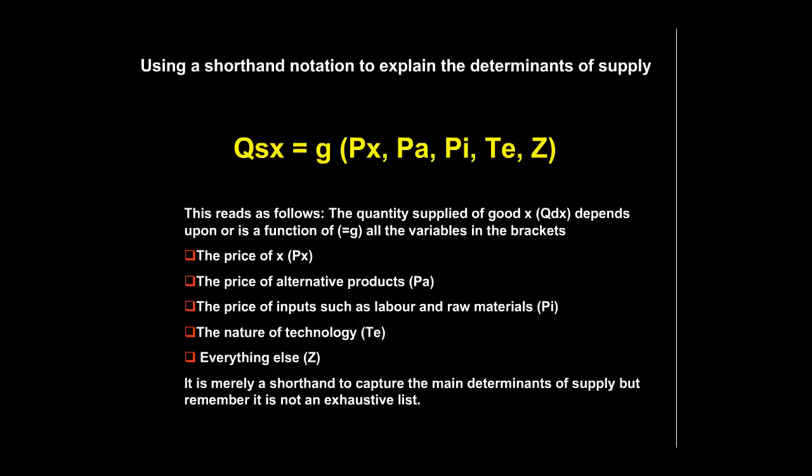From empirical evidence we can identify key determinants of supply and express them in shorthand notation. The quantity supplied of x — QSx — is a function g of: px (the price of x), the price of alternative products (pa), the prices of inputs such as labour and raw materials (pi), the state of technology, and everything else (z), which might include taxes or subsidies. Just as with demand, this is merely a shorthand to capture the main determinants of supply — it's not an exhaustive list.